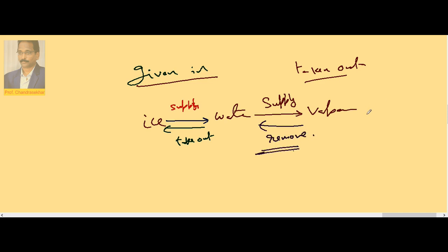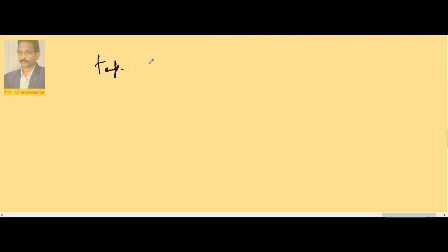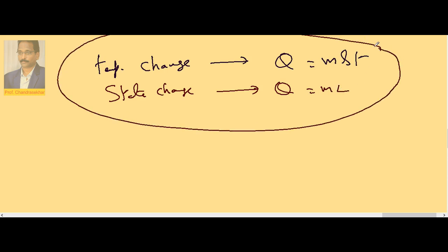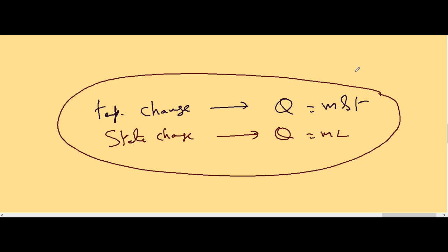So whenever state change is taking place, we use Q = ML. When only temperature change occurs with no state change, we use Q = MST. To summarise: temperature change uses Q = MST; state change uses Q = ML.